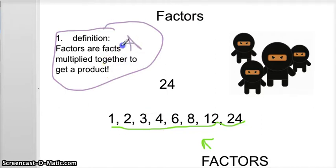This is the most important part. Now I'm going to read you the factors of 24. Factors of 24: one, two, three, four, six, eight, twelve, and twenty-four.